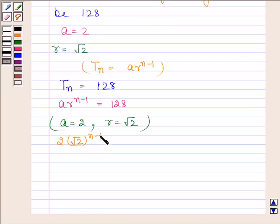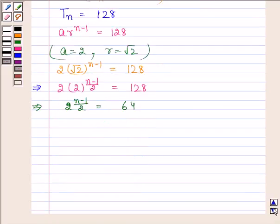2 into root 2 to the power n minus 1 is equal to 128. This implies 2 into 2 to the power n minus 1 by 2 is equal to 128. And this implies 2 to the power n minus 1 by 2 is equal to 64. And this implies 2 to the power n minus 1 by 2 is equal to 2 to the power 6.